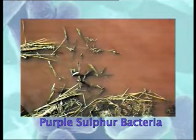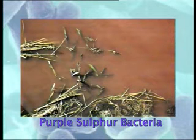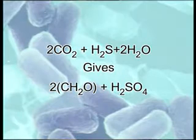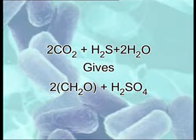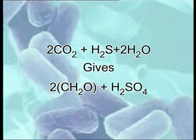Purple sulfur bacteria are also autotrophs. Their photosynthetic pigments are bacteriochlorophyll A and/or B. The reducing power is provided by hydrogen sulfide, which is oxidized anaerobically via elemental sulfur to sulfate. The sulfur is deposited in them intracellularly, or extracellularly in Ectothiorhodospira.